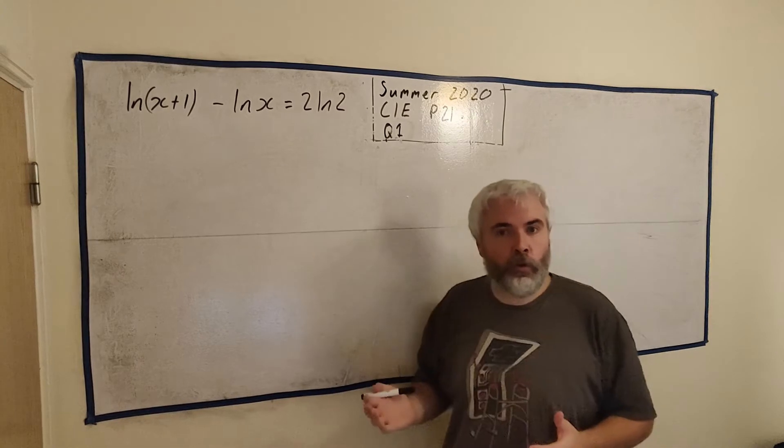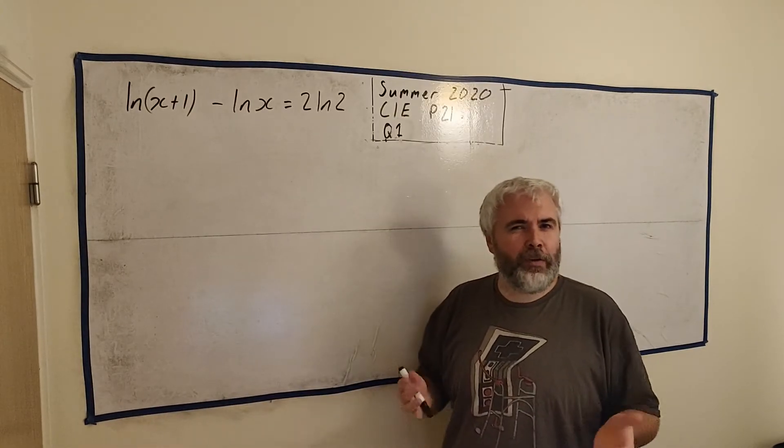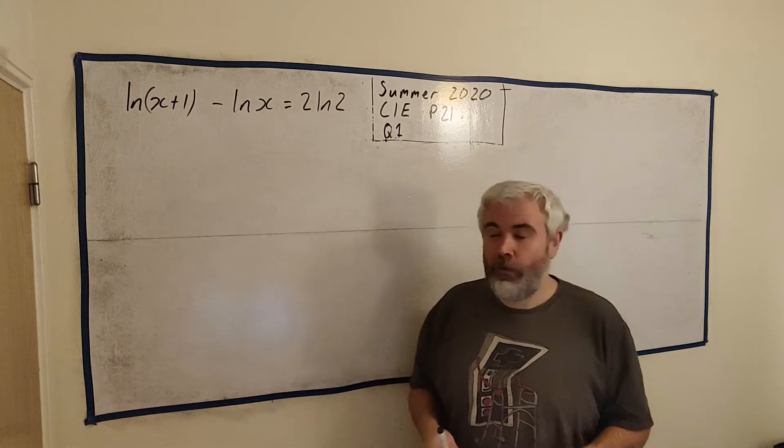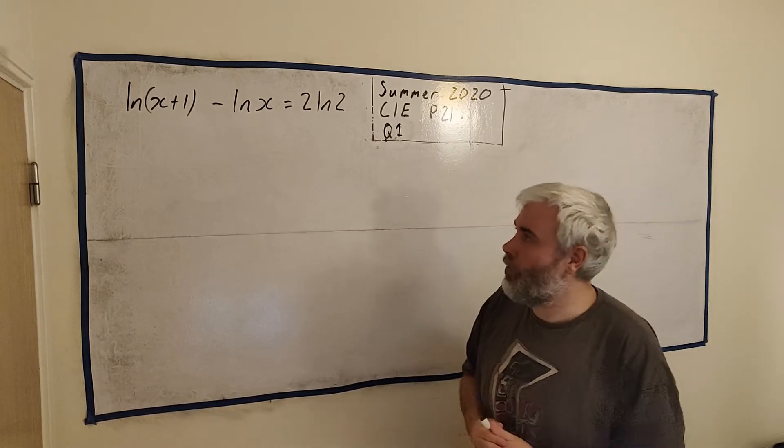When you're dealing with logarithms there's a set of about 7 or 8 rules. It's best to try and remember. We do prove them, we go through where they come from, but it's best to try and remember.